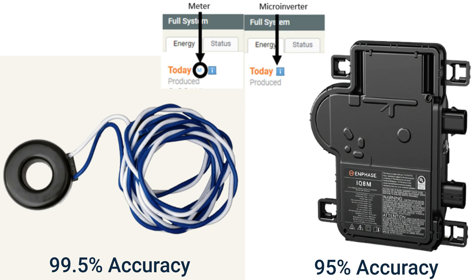It is important to remember that there will always be at least a 4.5% variance due to the accuracy differences between meters and microinverters. Production CT data reports production data at a 99.5% accuracy rate, while microinverters report production data at a 95% accuracy rate.